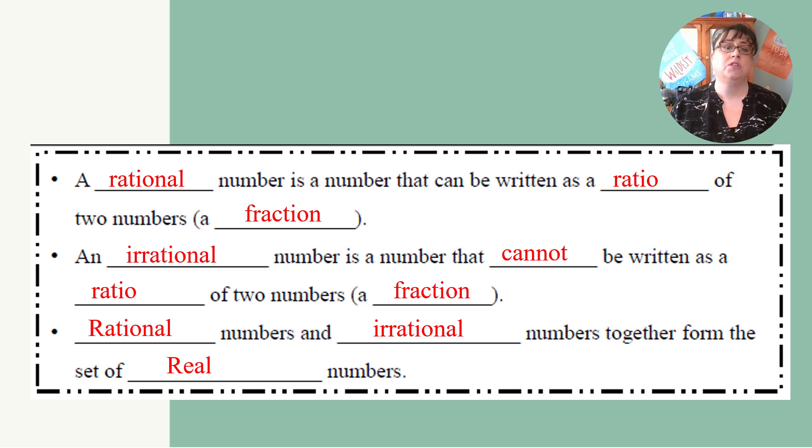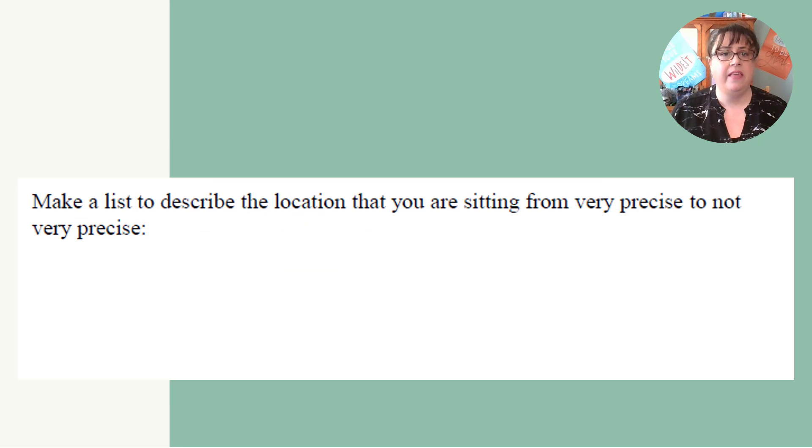So before we even start talking about rational and irrational numbers, let's actually talk about something that is a little bit easier to understand and that is making a list of the location of where you're sitting from precise to not very precise. This is going to help us understand rational and irrational numbers just a little bit better.